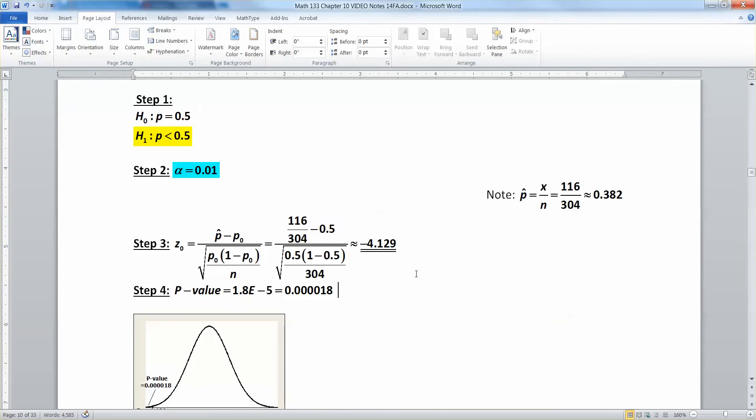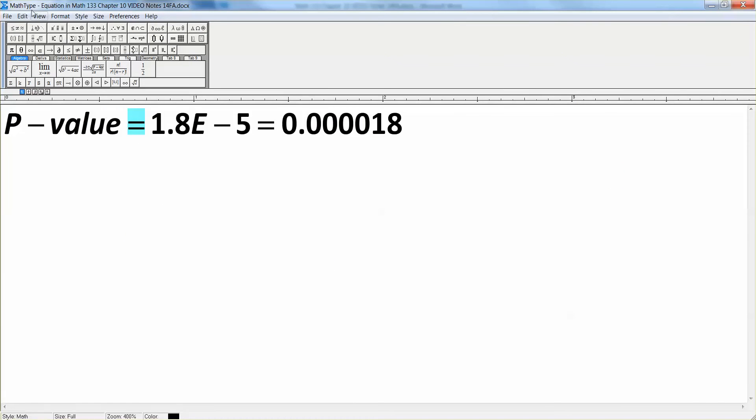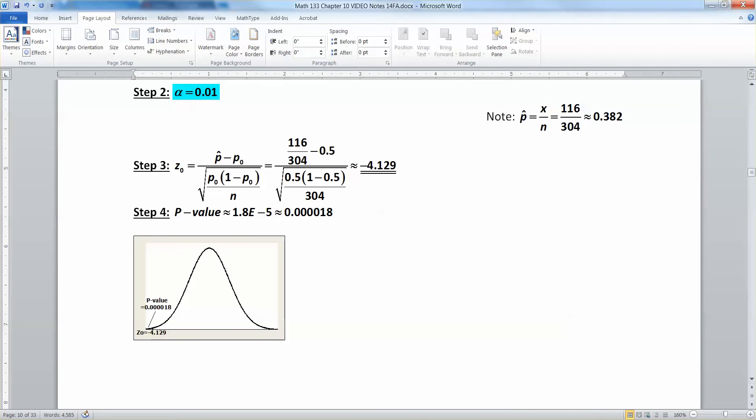Oh, I should put approximations in here. Okay. And, then we get that from the 1-prop-z-test output. Found from 1-prop-z-test-output.